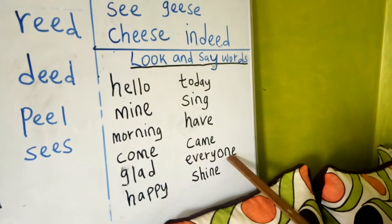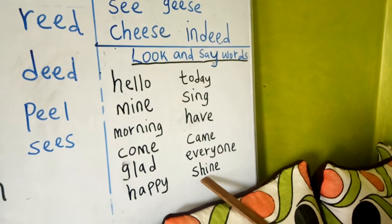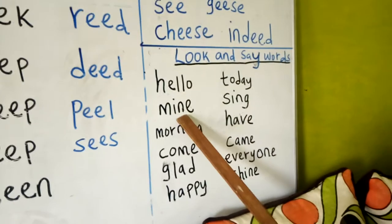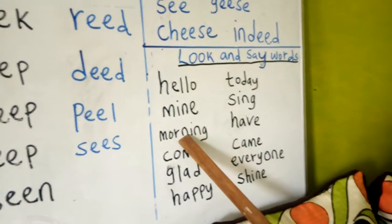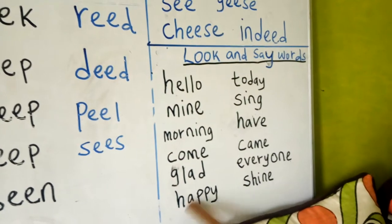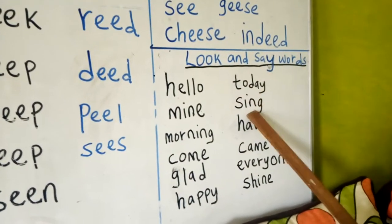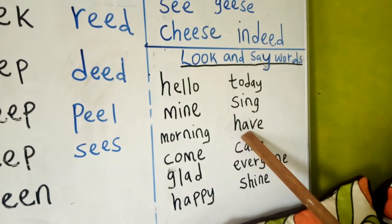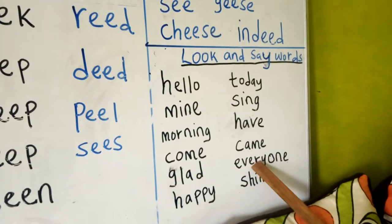Everyone, and shine. Hello, mine, morning, come, glad, happy, today, sing, have, came, everyone, and shine. If you look at those words, you will be able to read them correctly. And then you also read on 'ee' sound words. Bye bye!